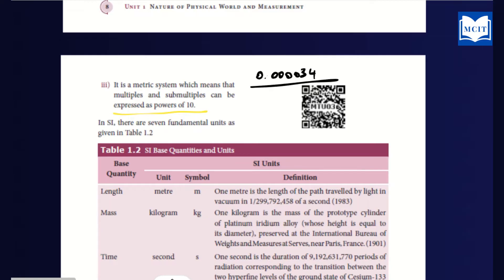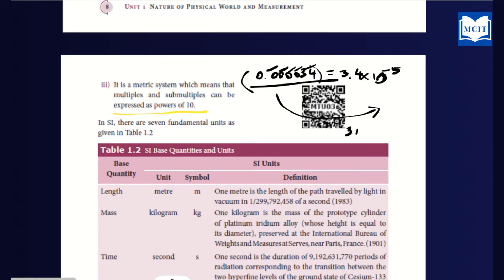What do we do with such a decimal? We count the digits: 1, 2, 3, 4, 5. When we place the decimal point after 5 digits, we can choose a numerical value. The decimal value 0.000034 becomes 3.4, which is equal to 10 power minus 5.